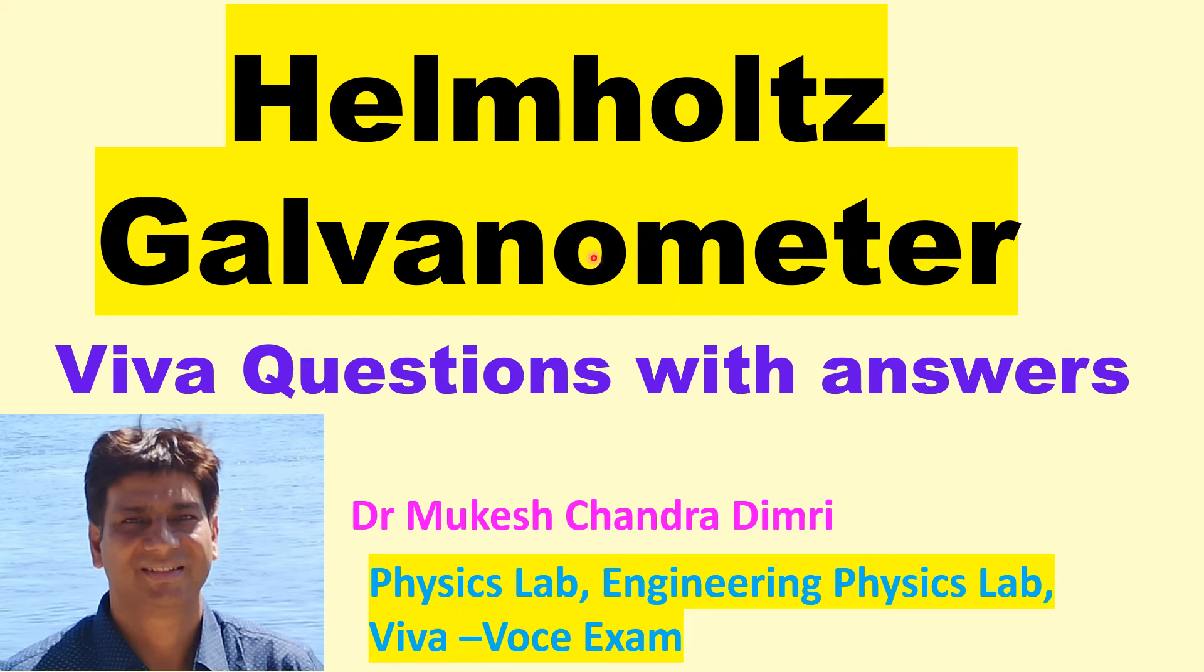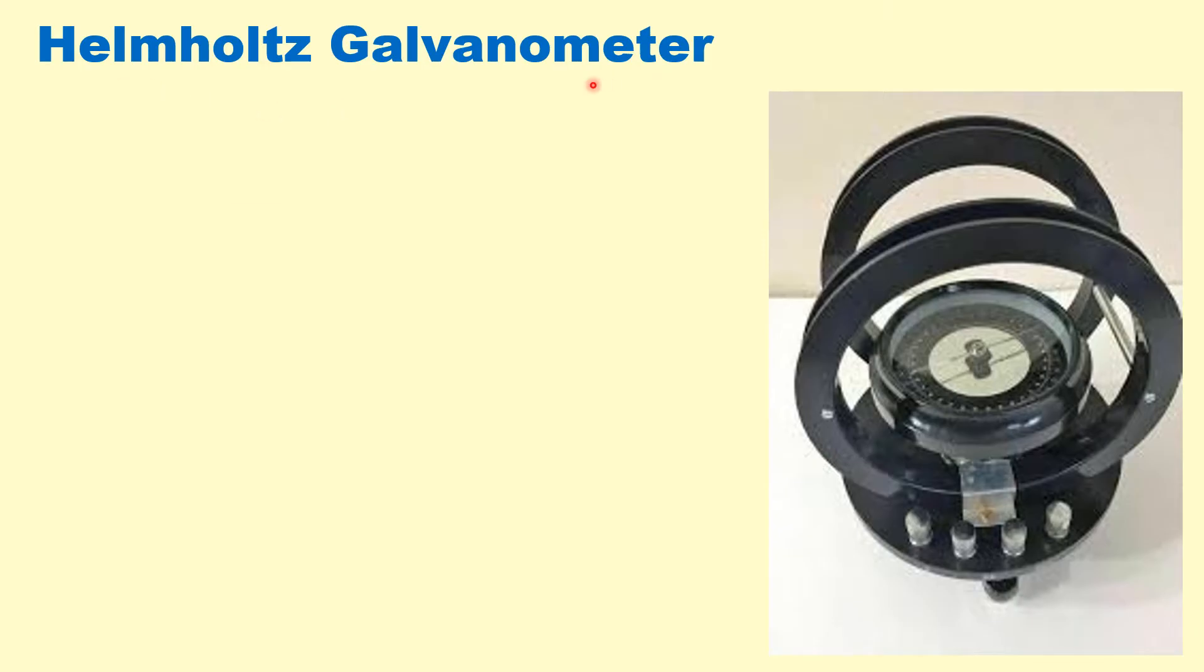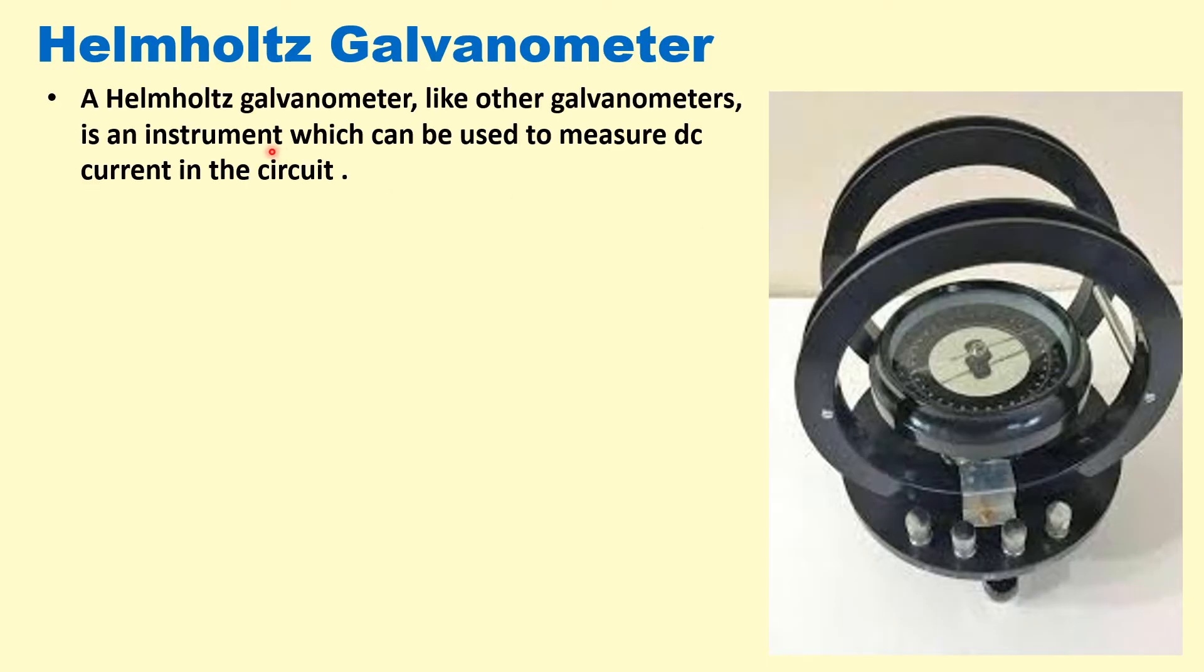Hello friends, today I will discuss the Helmholtz galvanometer experiment and the important five questions on it. What is Helmholtz galvanometer? Helmholtz galvanometer is an instrument which can be used to measure the DC current in the circuit by measuring the magnetic deflections.